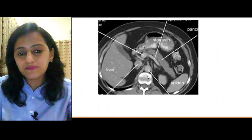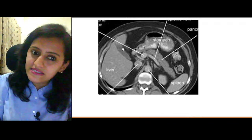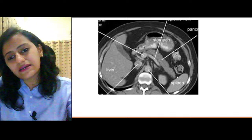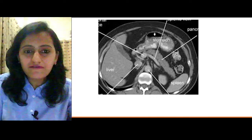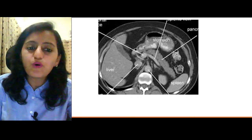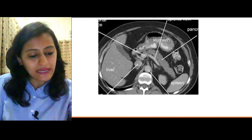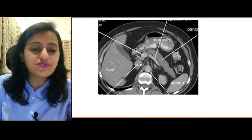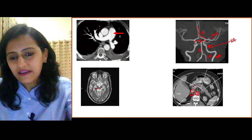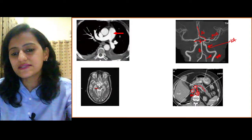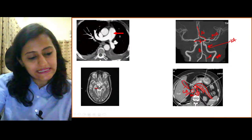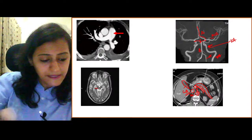CT abdomen anatomy: white bone confirms CT. Right side — liver, gallbladder (gray, fluid density). In front of the vertebra — aorta. Pancreas goes from right to left. In front of the pancreas, air-containing — stomach. Left side — spleen. Splenic vein and portal vein confluence form the portal vein. To the right of the aorta — IVC. The portal vein confluence is in front of the IVC.